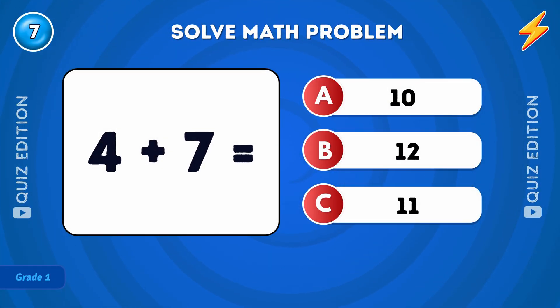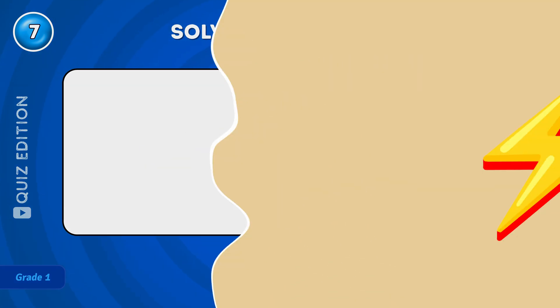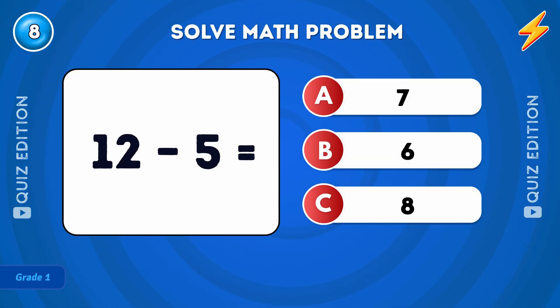What is 4 plus 7? The answer is 11. What is 12 minus 5? The answer is 7.